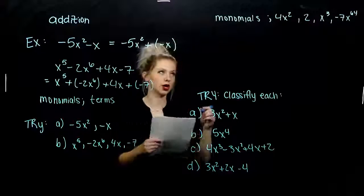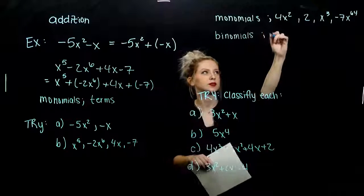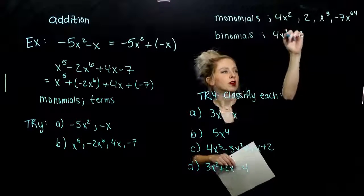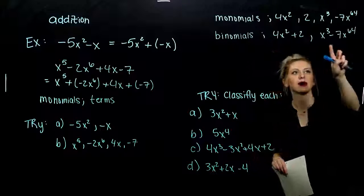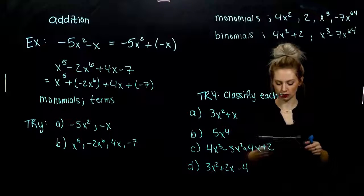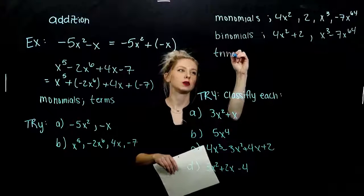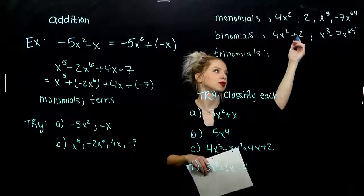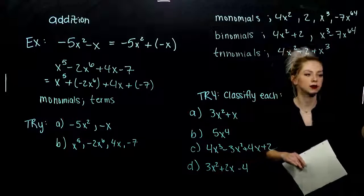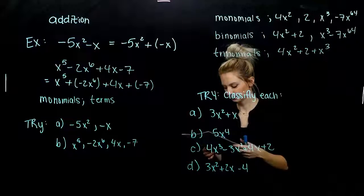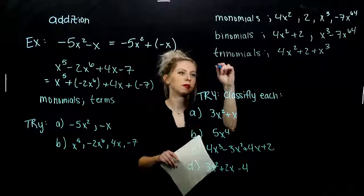Polynomials with just two terms are going to be called binomials. A few examples: 4x squared plus 2 — that's a binomial. x cubed minus 7x to the 64th — that is a binomial. Two terms in each piece. Polynomials with just three terms — trinomials. They've got three monomials inside. Those with more than three don't have specific names, so we just call them polynomials.